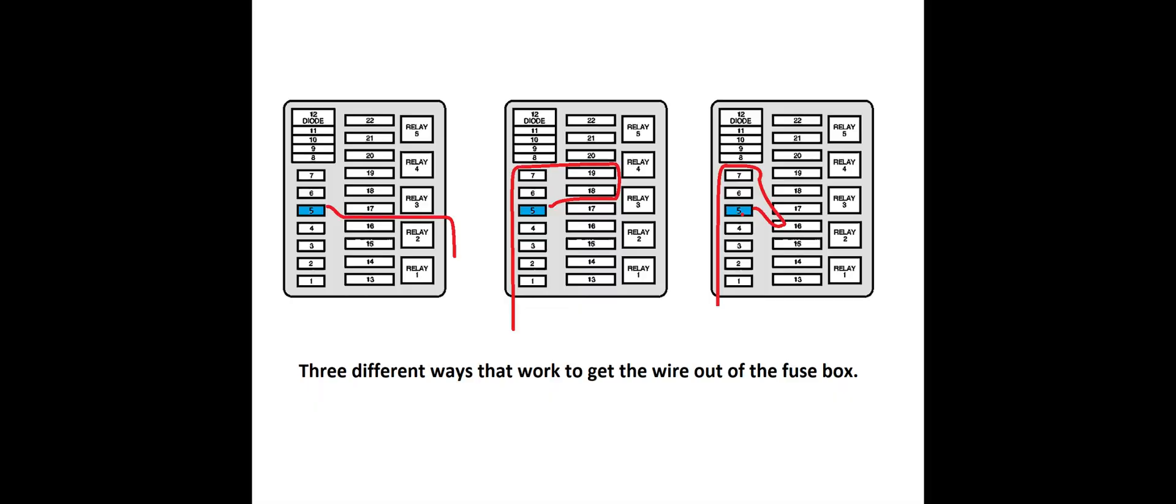On this next illustration I show you three ways we have successfully routed the wire out of the fuse box without issue. You will have to trim the lid and then drill a small hole for the wire to pass through.